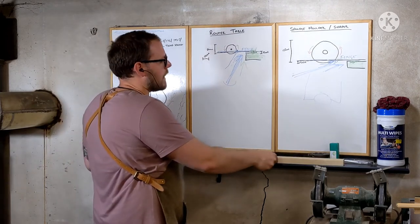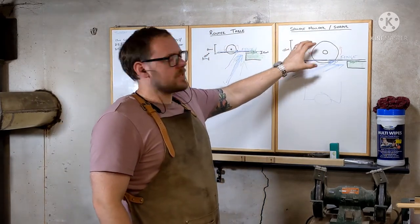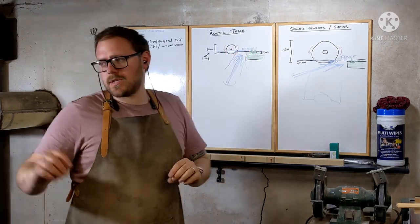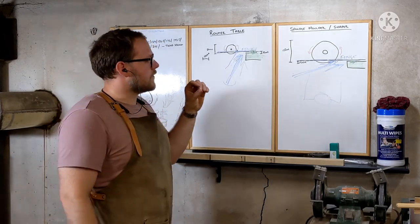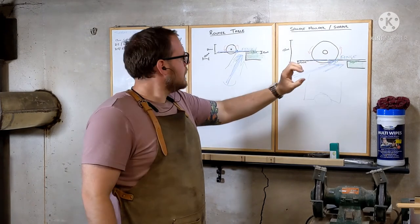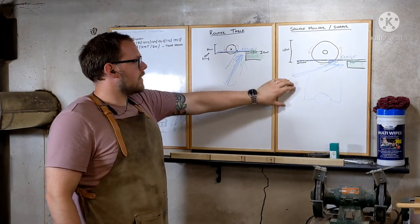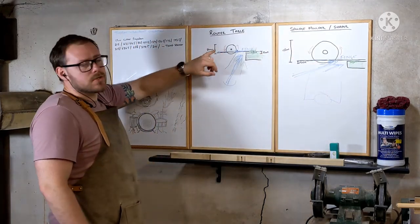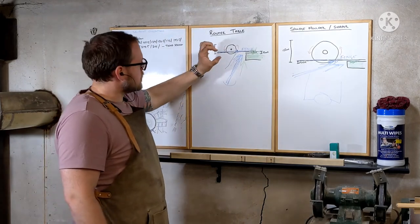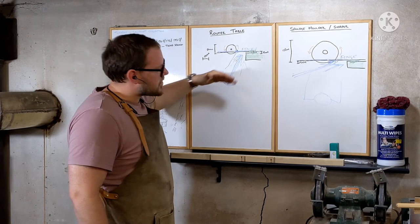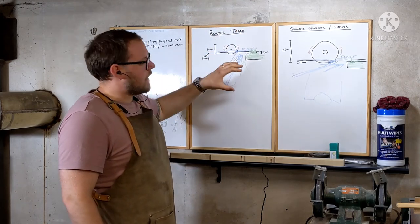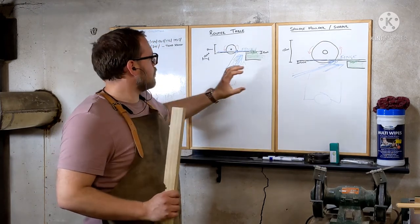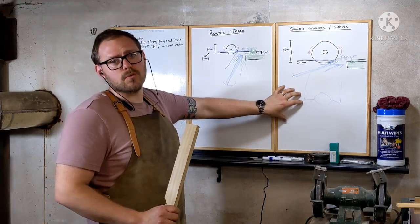That's one way that the way a spindle molder cuts is very different to the way that the router table cuts, even doing the same process. This isn't looking at what things we can do differently on each machine, what one can do that another can't. This is just looking at the way that they interact with the timber when they cut and how that process varies - from a spindle molder with a much wider cut path and a much shallower angle exiting the timber, and a router doing the exact same process with a much smaller circumference, smaller diameter cutter taking a much steeper exit out the back of the timber. That's one good example of where doing the exact same process, the spindle molder is generally going to give you a better finished result straight off the machine prior to sanding and finishing than the router table.